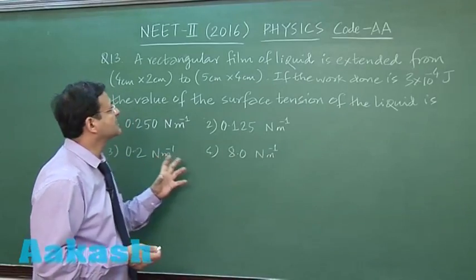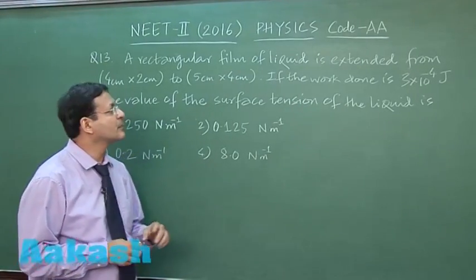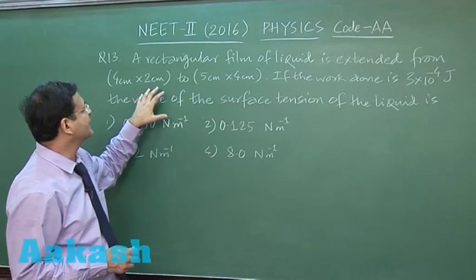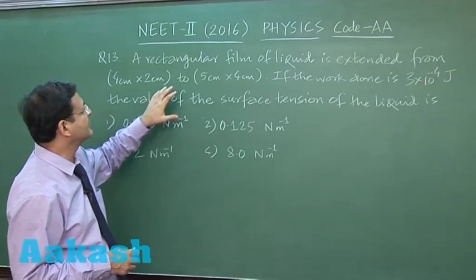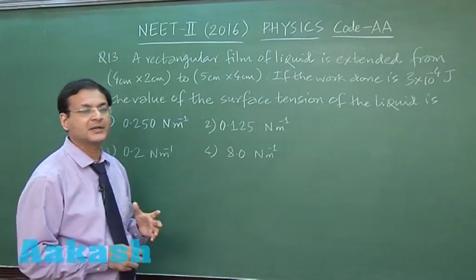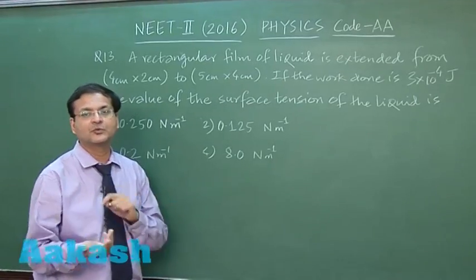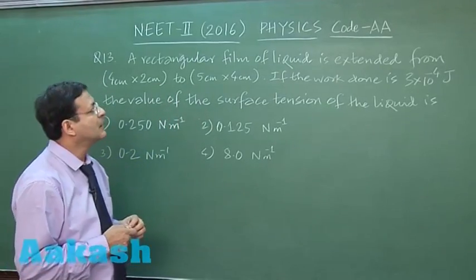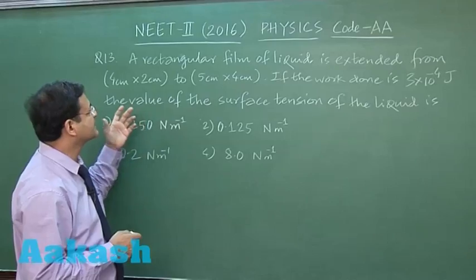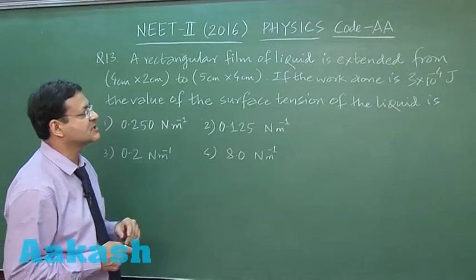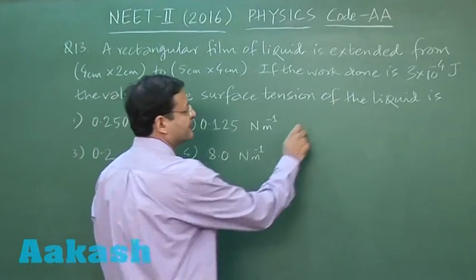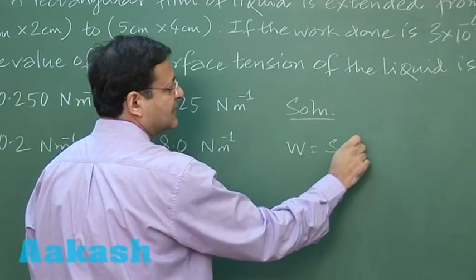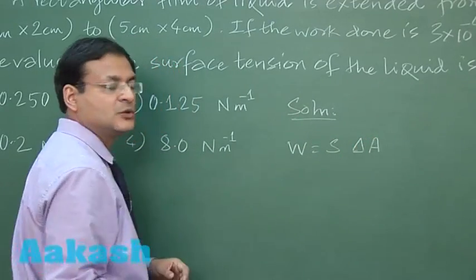Question 13 is based on surface tension. A rectangular film of liquid is extended from 4 cm × 2 cm to 5 cm × 4 cm — that is the initial area of the film. Also note that the film will have 2 valid surfaces, so the area has to be multiplied by 2 effectively. If the work done is 3 × 10⁻⁴ J, the value of surface tension of the liquid is to be found. The formula to use is: work done = surface tension × change in surface area.